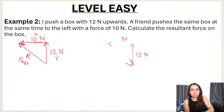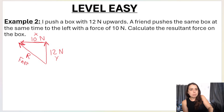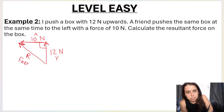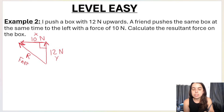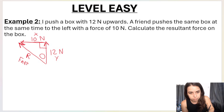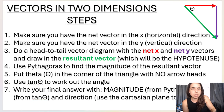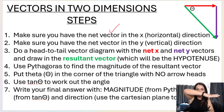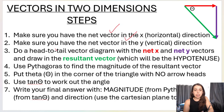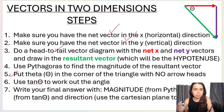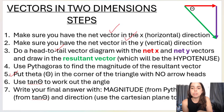The x and y axes meet at 90 degrees perpendicularly, so put your 90-degree angle there. Tan theta goes in the corner where there are no arrowheads. According to our steps, we have the net vector in x, the net vector in y, the head-to-tail diagram, and theta placed correctly. Now step four: use Pythagoras to find the magnitude of the resultant vector.